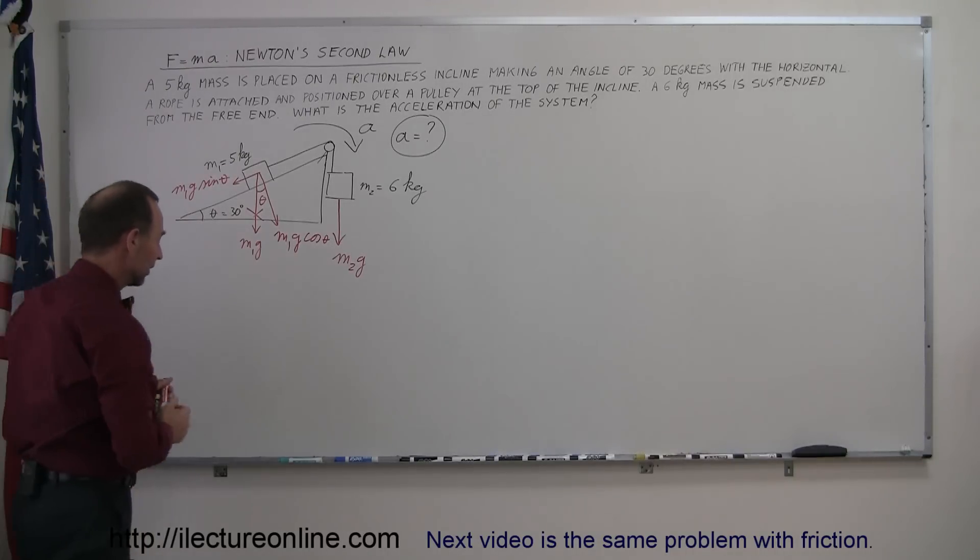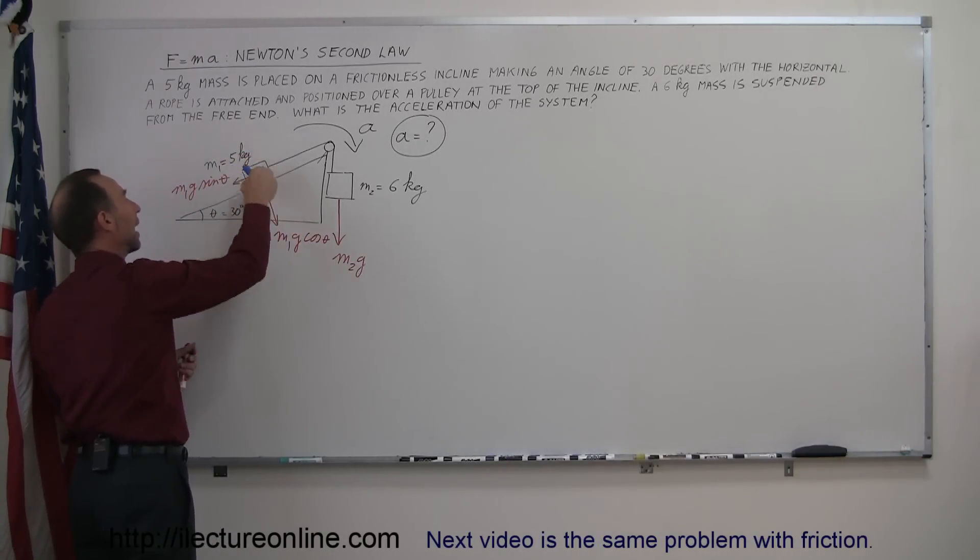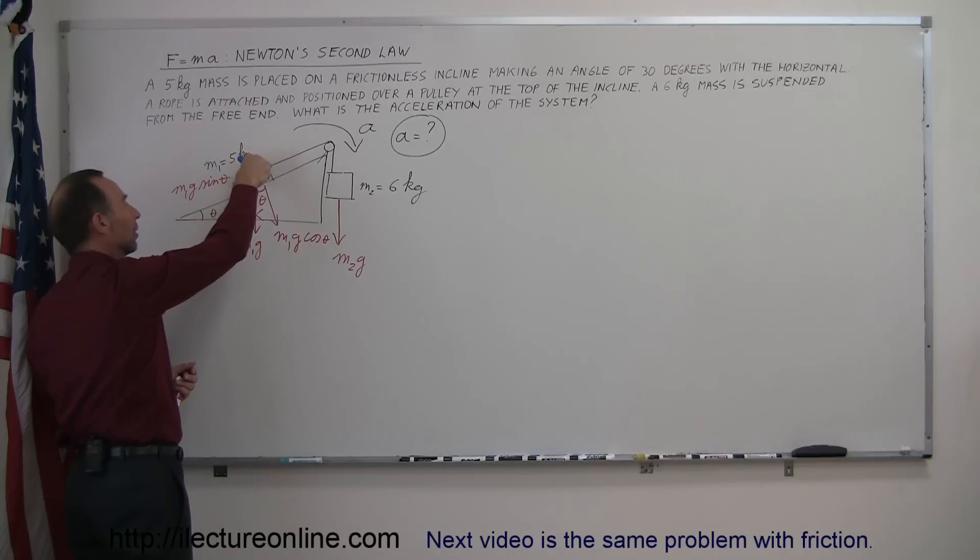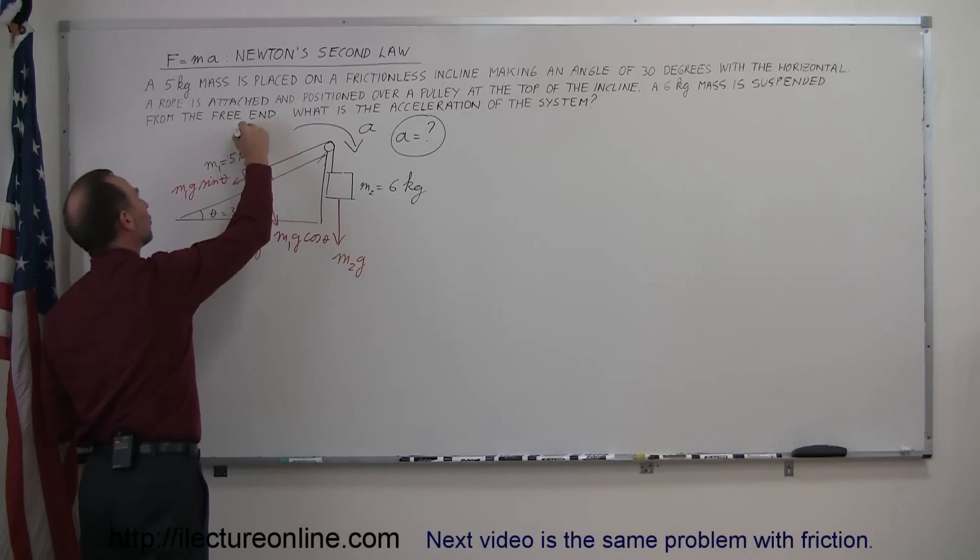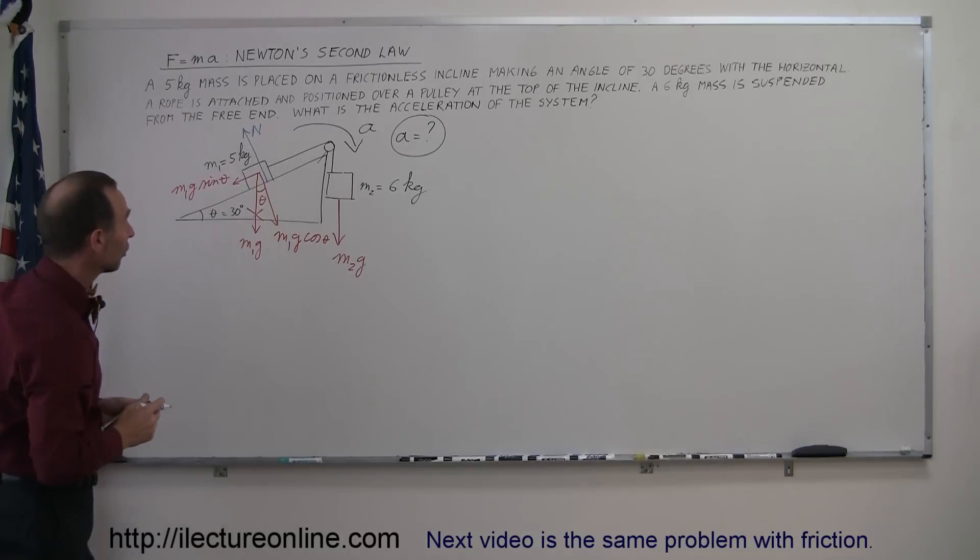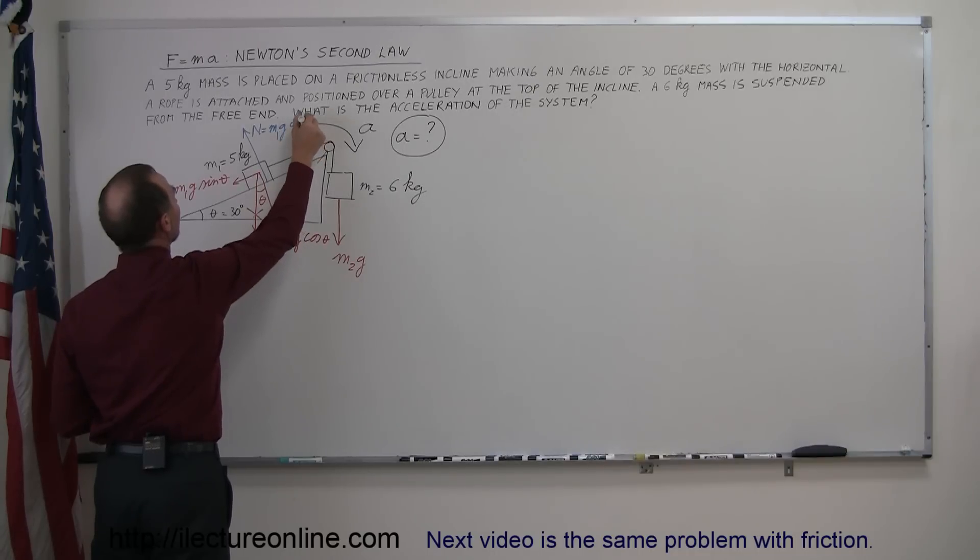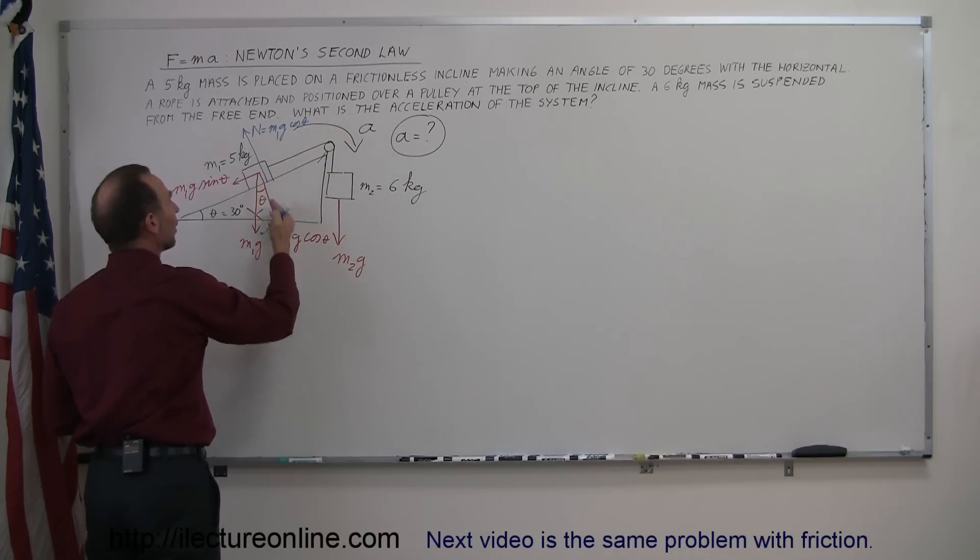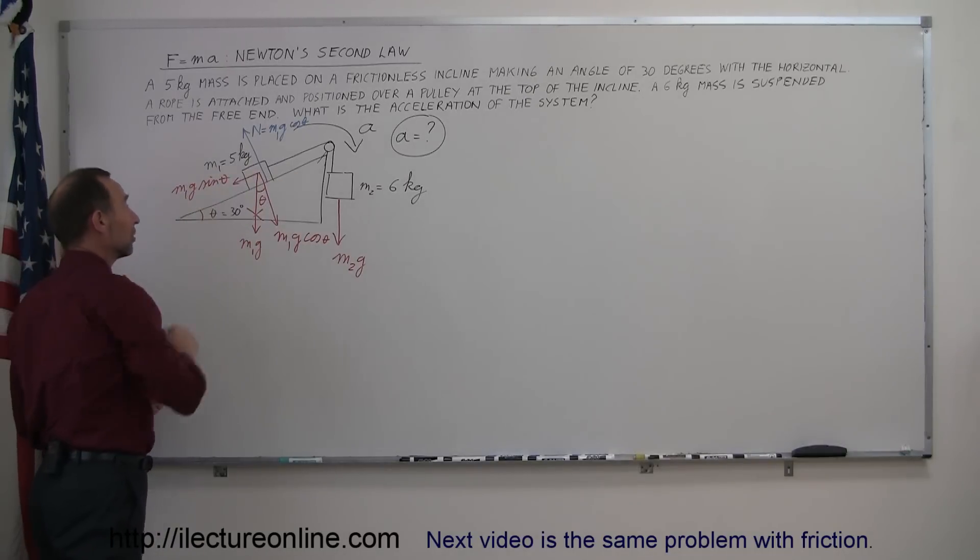Now there's a second force acting here. It's the incline pushing back. Since the weight of the block m1 is pushing it into the incline, then the incline will have an equal and opposite force, the normal force pushing back. That's according to Newton's third law, and that is equal to m1g cosine of theta. So it's equal in magnitude to this force, just opposite in direction. And of course, those two forces then cancel each other out.